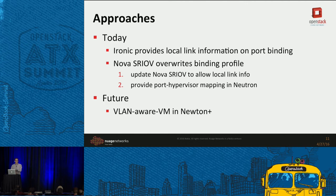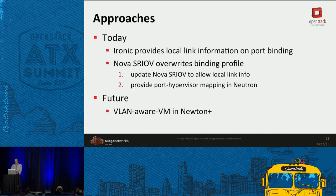In future, with the work going on around VLAN Aware VMs, this will hopefully become simpler. VLAN Aware VMs is a way to expose multiple VLANs to a workload. Some of our participation in that was to make sure it applied to non-VM cases — Ironic and SRIOV — as well as traditional VMs. We're going to be doing some work over the next cycle to turn that into code, and hopefully it'll land in Newton.